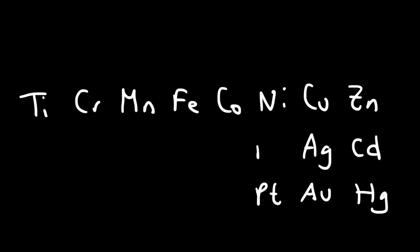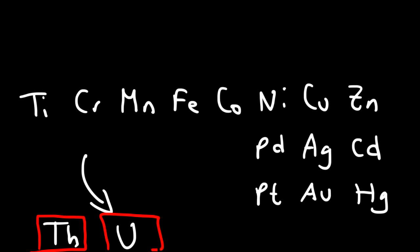Pt is platinum and Pd is palladium. Below the transition metals are the inner transition metals — the lanthanide and actinide series. The most common ones you'll see are thorium (Th) and uranium (U). On my first day in AP Chemistry in high school we were told there'd be a pop quiz on naming elements of the periodic table — 30 or 40 elements — so make sure you know those names.